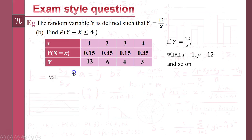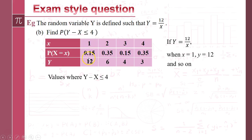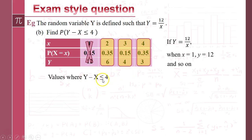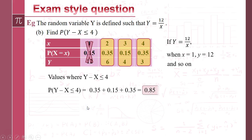We want the probability that Y minus X is less than or equal to 4. Let's check each case: 12 minus 1 is 11 — not less than or equal to 4, so no. 6 minus 2 is 4 — that satisfies equal to or less than 4, so yes. 4 minus 3 is 1 — yes. 3 minus 4 is minus 1 — yes. So the values where Y minus X is less than or equal to 4 are those three. The probability is simply those three probabilities added together, which gives 0.85.